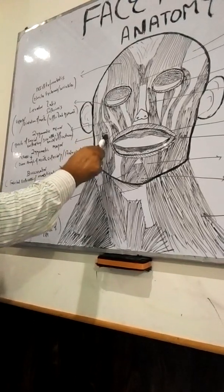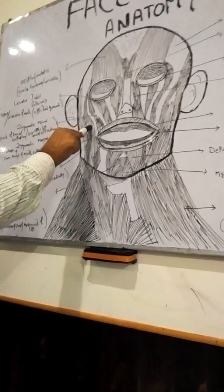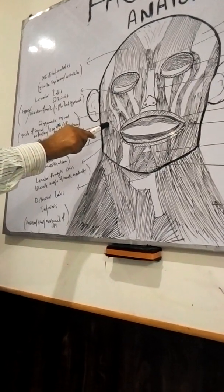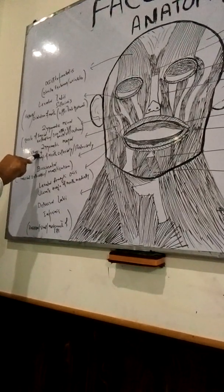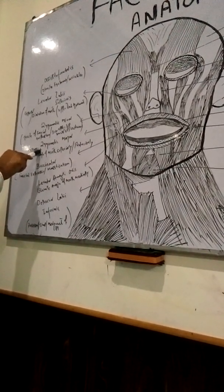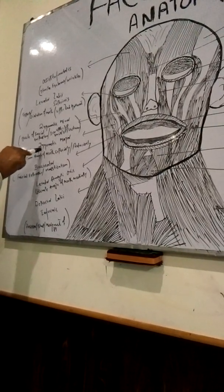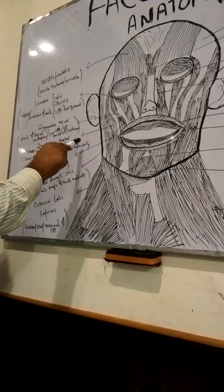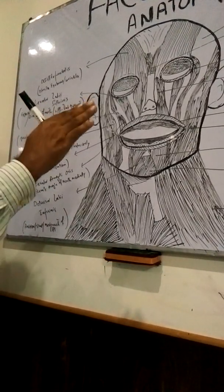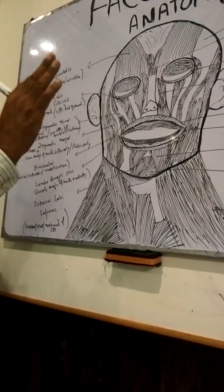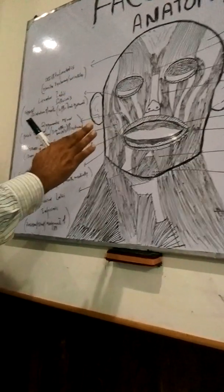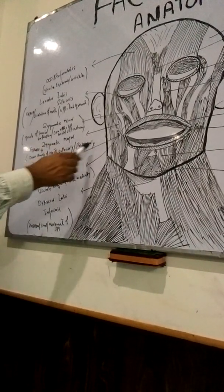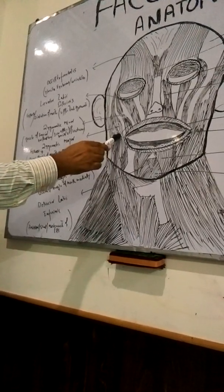The next muscle is zygomaticus major. It also has three important functions: first, facial expression related to smile, sadness, and horror; second, drawing the mouth superiorly and posteriorly; and third, all movements of drawing the mouth superiorly or anteriorly are the responsibility of zygomaticus major.